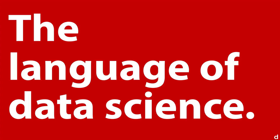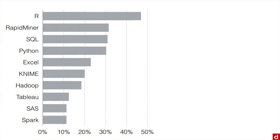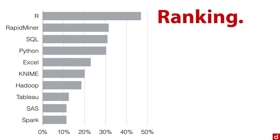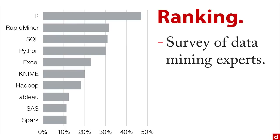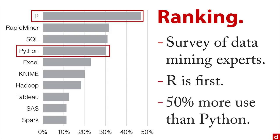It's arguably the language of data science. And just so you don't think I'm making stuff up off the top of my head, I have some actual data. This is a ranking from a survey of data mining experts on the software that they use most often in their work. Take a look here at the top — R is first. In fact, it's 50% more than Python, which is another major tool in data science. Both of them are important, but you can see why I personally am fond of R and why it's the one I want to start with in introducing you to data science.